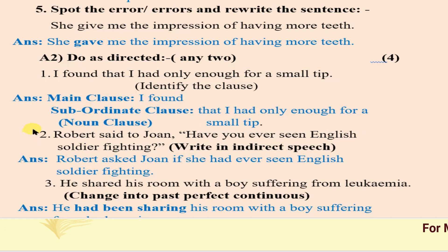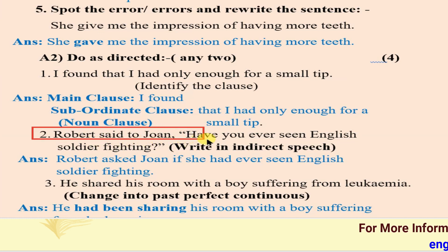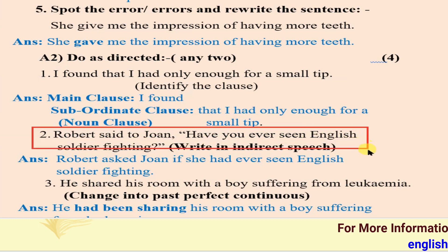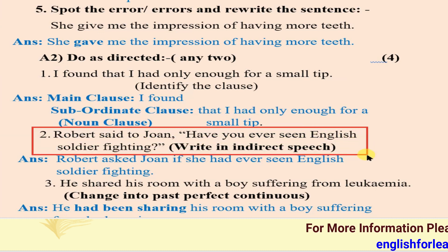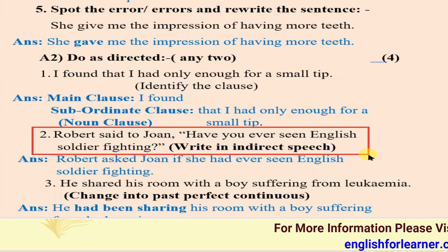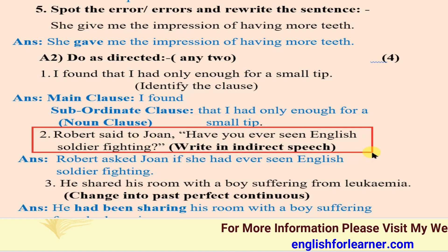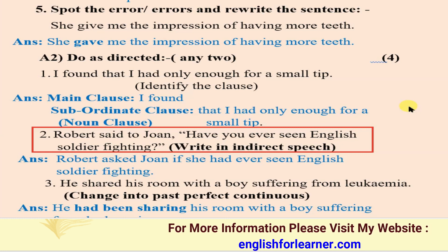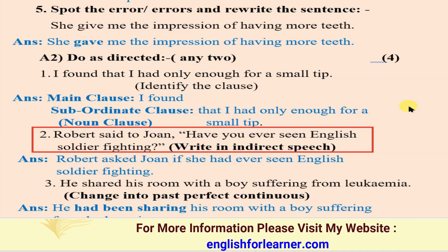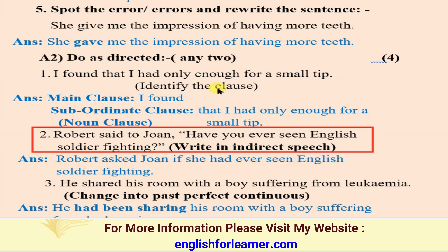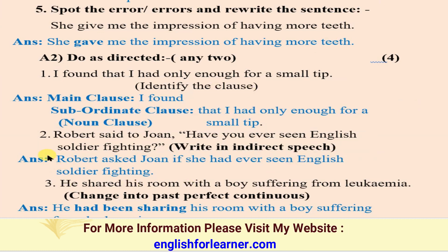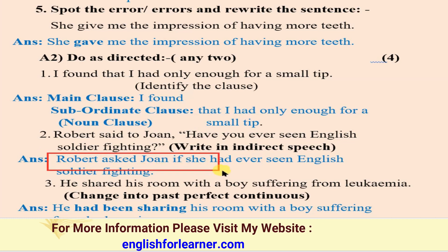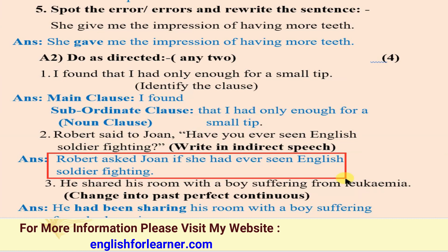Next, activity number two: the sentence is — 'Robert said to John, Have you ever seen an English soldier fighting?' Rewrite in indirect speech. The answer is: 'Robert asked John if he had ever seen an English soldier fighting.' You should know how to convert direct speech to indirect speech to do this.